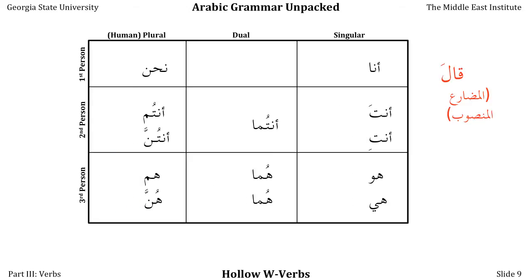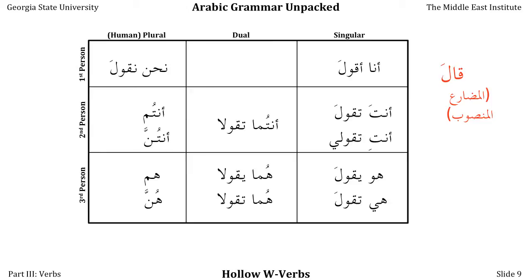In the MUDARIT MANSOOB, the second version of the present tense, the verb is going to behave exactly the same way as we're used to. AQULA, taQULA, taQULI loses its noon, yaQUL, taQUL, the dual forms lose their noons, the NAHNU form is regular, the ANTUM form loses its noon. The 'y'all ladies' form, again, because the suffix begins with SUKUN, is going to change the long vowel WAW into a DHAMMA. This is very little used in modern Arabic. The HUM form is regular — it loses its noon — but the HUNNA form begins with SUKUN, so it behaves a little bit differently. This is included here for the sake of completeness.